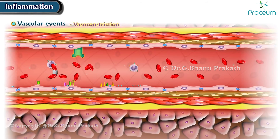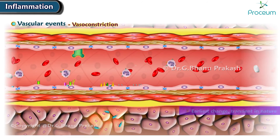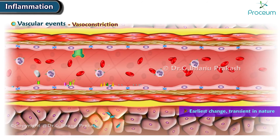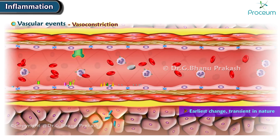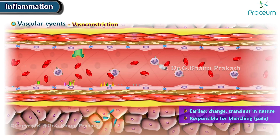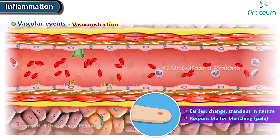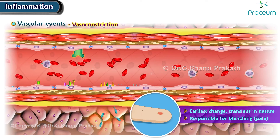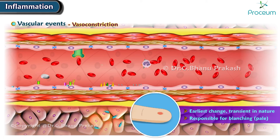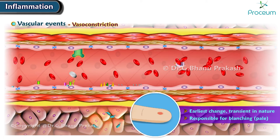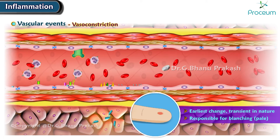First, there's vasoconstriction. This event is the earliest change, which is transient in nature. This is what's responsible for blanching, or skin turning pale. As the immediate response to injury or insult, the blood vessels rapidly and transiently constrict and then dilate.